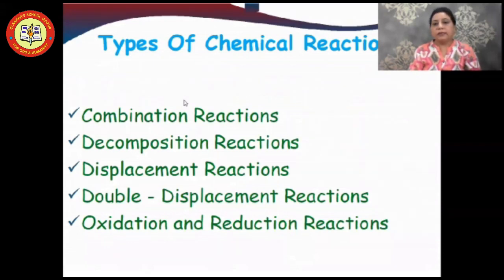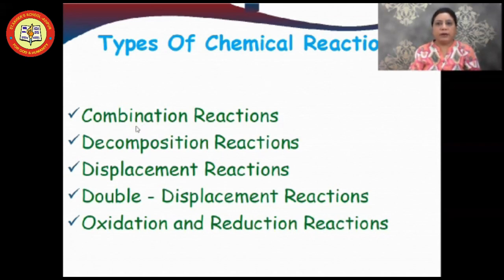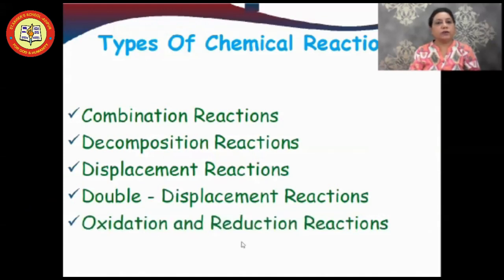This chapter consists of two parts: the first part is balancing a chemical equation, and the second part is the types of chemical reactions. In today's session I will cover the types of chemical reactions first. The types are: combination reaction, decomposition reaction, displacement reaction, double displacement reaction, and lastly oxidation and reduction reaction.